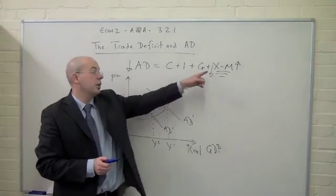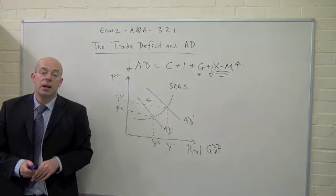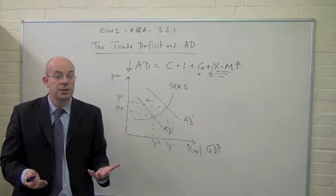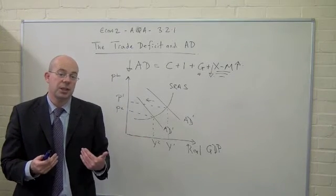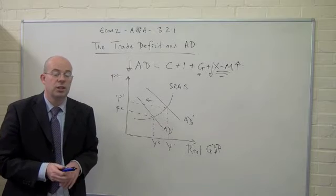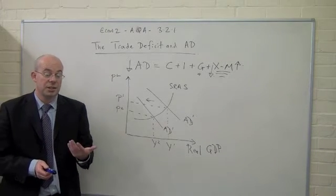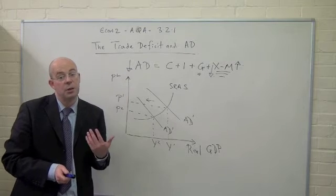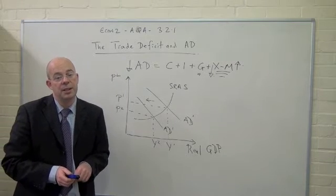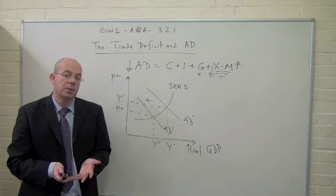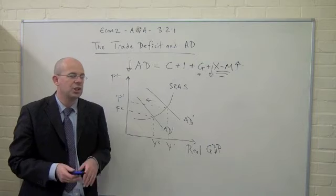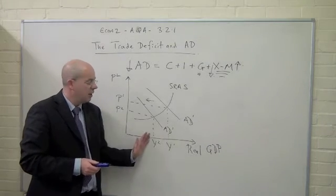Of course with exports going into decline that will mean less national output as our British exporting companies are not manufacturing as much. It might mean job losses, so we might see a decline in the profits and the wages of British export companies and also in terms of just general national expenditure. So we've got a lower level of GDP.